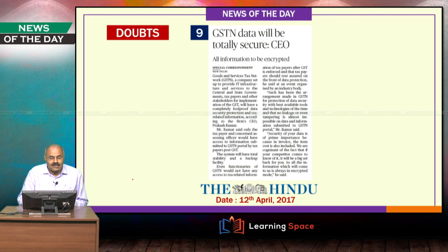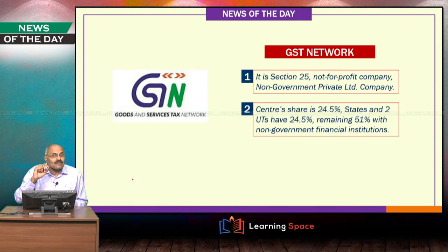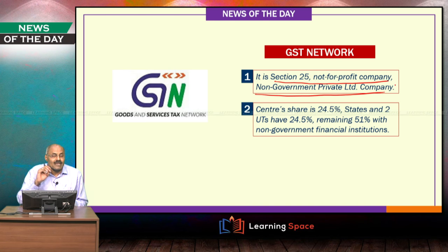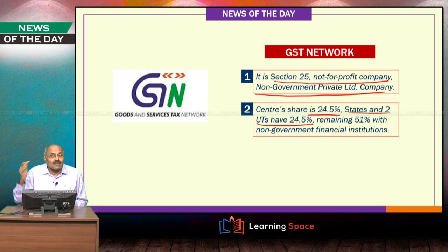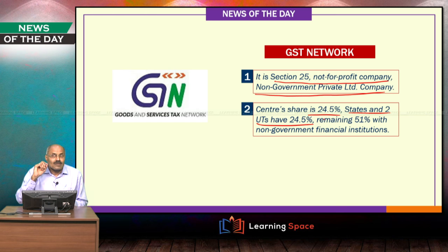In yesterday's news item about GSTN data security, it was discussed that GST Network is a Section 25 not-for-profit company — a non-government private limited company where the center's share is 24%, states and two UTs hold 24%, and the remaining 51% is with non-governmental financial institutions.